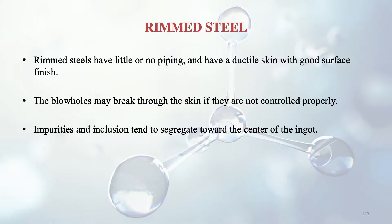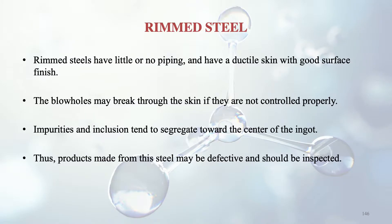In rimmed steel, impurities and inclusions tend to segregate towards the center of the ingot. Therefore, products made from this steel may be defective and should be inspected carefully.